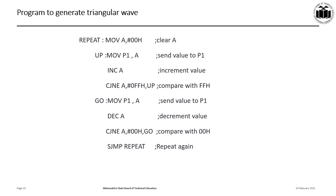The next instruction, DEC A, decrements the value in A by 1, which becomes FEH. CJNE A, #00H, GO compares the value in A with the minimum value 00H. As they are not equal, the program control is shifted to the label GO, where the value in A is sent to Port 1 and the DAC generates the next voltage level. Again, DEC A is executed, the value in A is compared with 00H, and program control is transferred to GO. These steps are repeated till the value in A becomes equal to 00H. Once it equals 00H, the program control is shifted to the next line, SJMP REPEAT, and the whole program is repeated again continuously, thereby giving us a continuous triangular waveform.